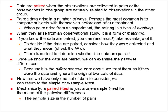Okay, now, we're going to move on now to what we call paired data, and this is what makes this homework a little bit hard, because sometimes the data is paired, and sometimes it's not, and you have to be careful, because if it's paired, you want to take advantage of that in the way that you do your observations. So it says, data are paired when observations are collected in pairs or the observations in one group are naturally related to the observations in the other group. Paired data arise in a number of ways. Perhaps the most common is to compare subjects with themselves before and after a treatment. When pairs arise from an experiment, the pairing is a type of blocking. When they arise from an observational study, it's a form of matching. If you know the data are paired, you can and must take advantage of it to decide if the data are paired. Consider how they were collected and what they mean. There is no test to determine whether the data are paired. You just have to think about it.